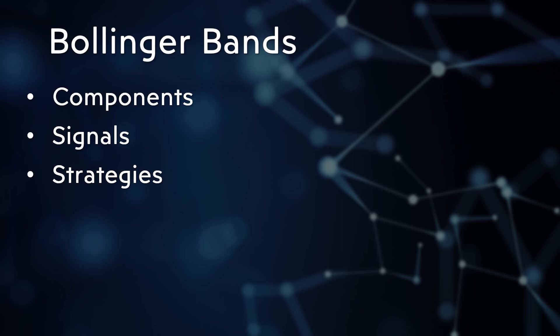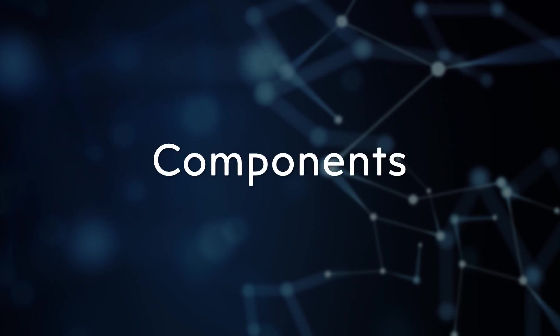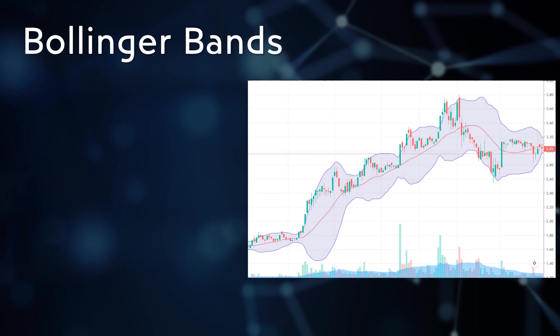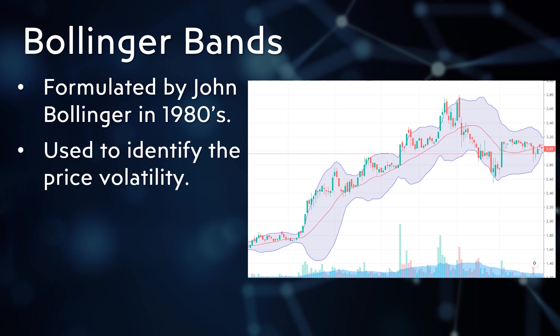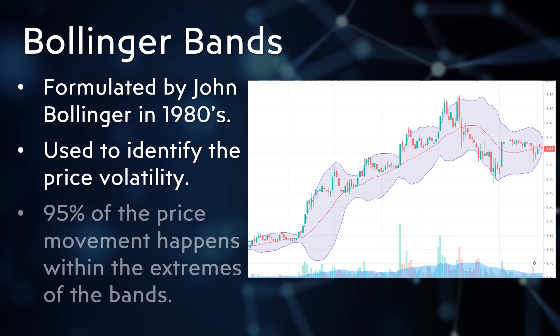We will also cover practical trading tips using these concepts. Bollinger Bands were formulated by John Bollinger in the 1980s and are still one of the most widely used indicators today. They are designed to identify price volatility — 95 percent of the price oscillates between the extremes of the bands.